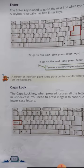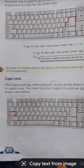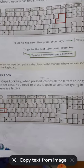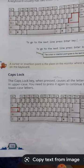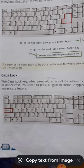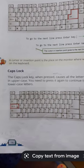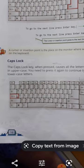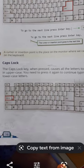The next special key is the caps lock key. The caps lock key is used when we want to type capital letters, meaning uppercase letters. When you press the caps lock key, it causes all the letters to be typed in uppercase. You need to press it again to continue typing in lowercase letters.